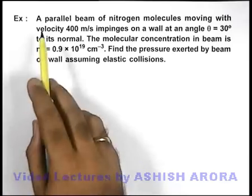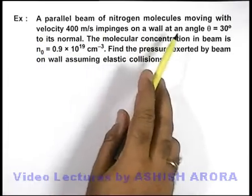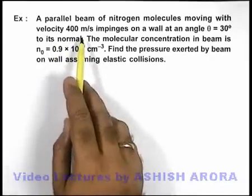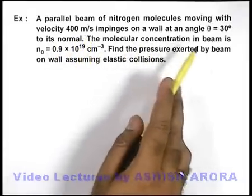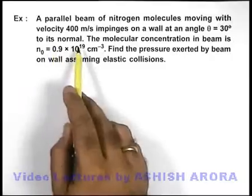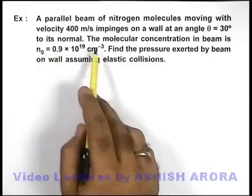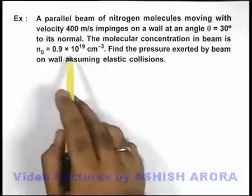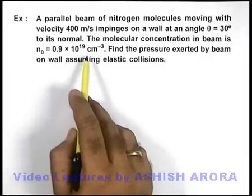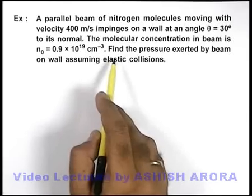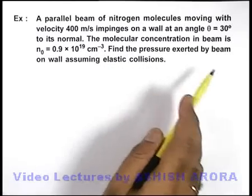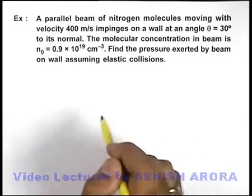In this example we are given that a parallel beam of nitrogen molecules moving with a velocity of 400 meters per second impinges on a wall at an angle 30 degrees to its normal. The molecular concentration in the beam is given as 0.9 × 10^19 per centimeter cube, and here we are required to find the pressure exerted by beam on wall assuming elastic collisions.